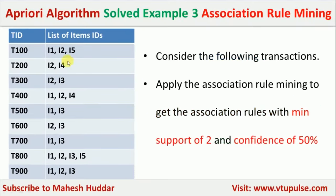This is the dataset given to us. There are 9 transactions. In each transaction, few of the items were bought. For example, in the first transaction, I1, I2, and I5 were bought. In the second transaction, I2 and I4 were bought. Similarly, in different transactions, different sets of items were bought.